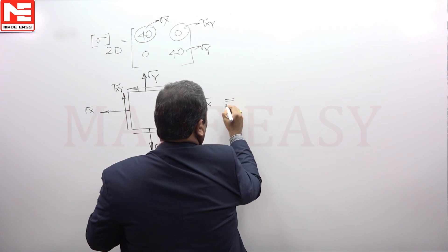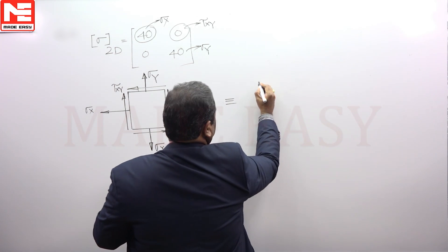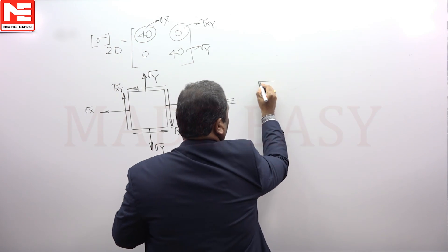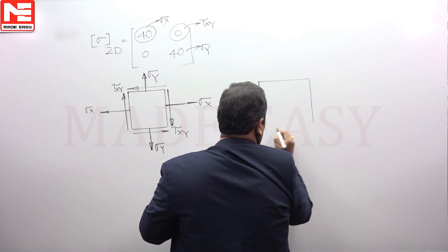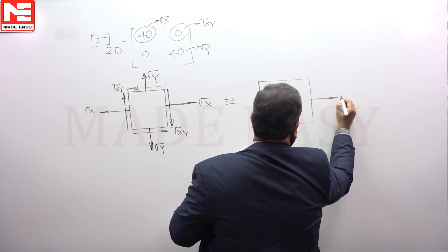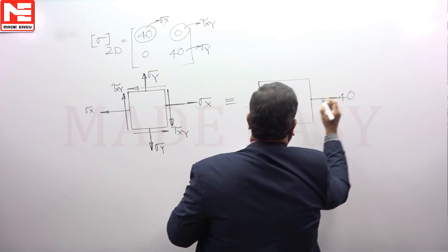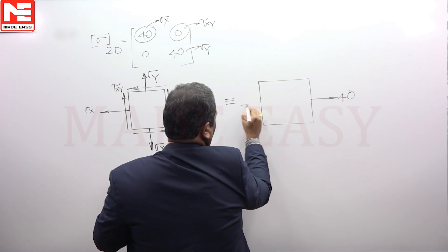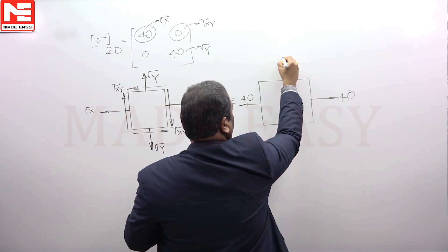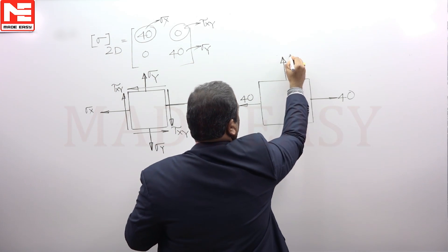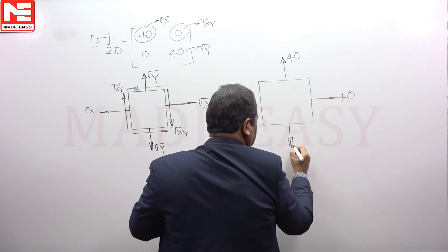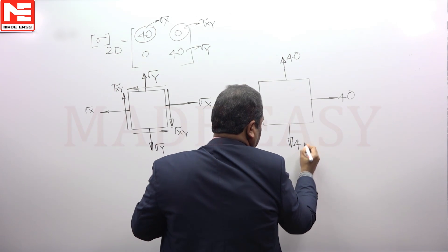For this one, as per the given state of stress, sigma x is given as 40, sigma y is also given as 40, but tau xy is given as 0.